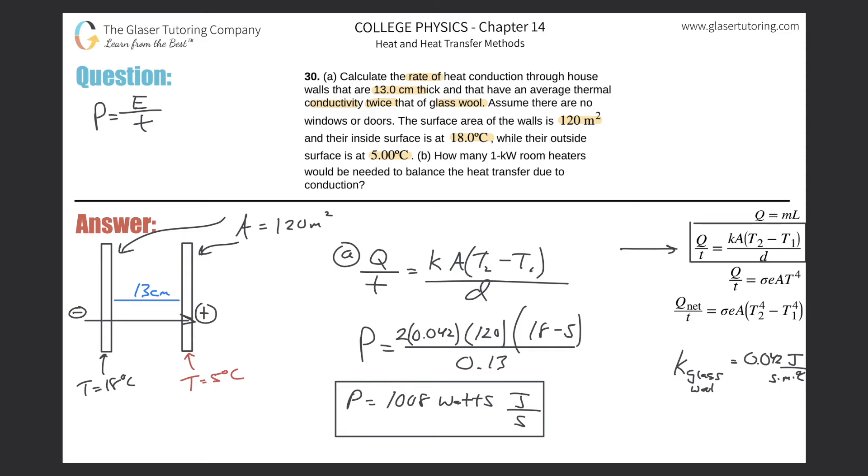This is the magnitude. The sign would be negative now if you were talking about what's the rate of heat loss for the interior. It'd be negative 1,008 watts. And then the rate of heat gain by the outside would be positive 1,008 watts. You could just leave it like that. That takes care of letter A.